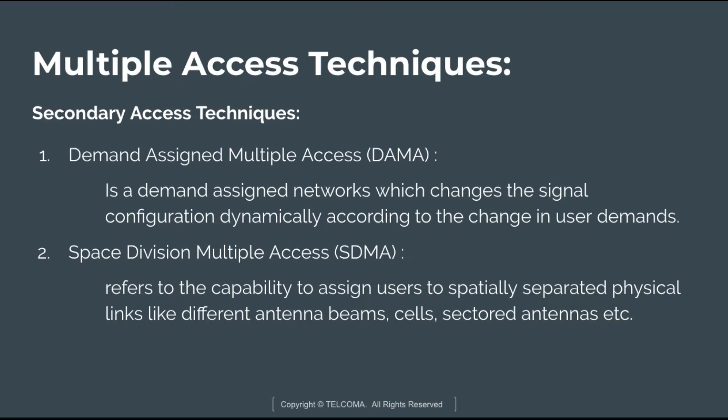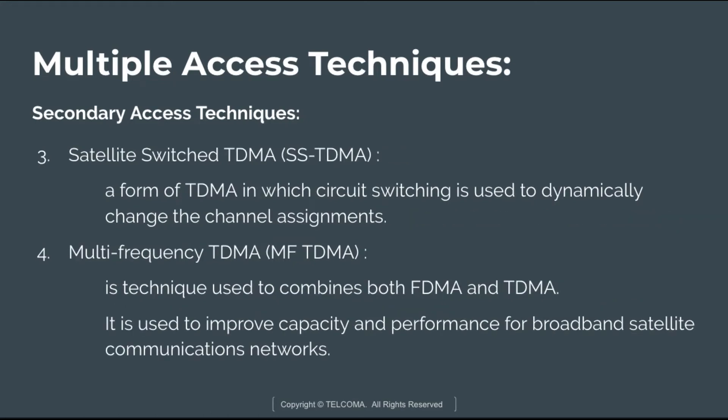The next secondary technique is Space Division Multiple Access (SDMA). SDMA refers to the capability to assign users to spatially separated physical links, such as different antenna beam cells and sector antennas. It can be employed with any of the three basic multiple access techniques — FDMA, TDMA, and CDMA. It is an essential element of mobile satellite networks that employ multi-beam satellites, and may also include frequency reuse and orthogonally polarized links to further increase network capacity.